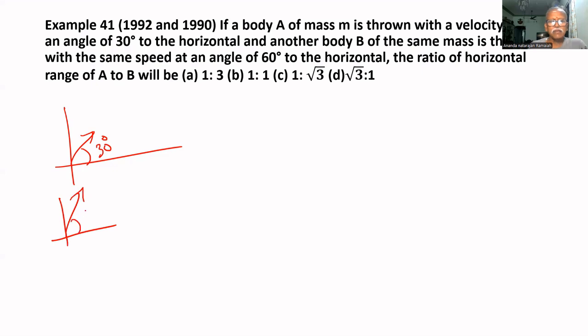The second body has the same mass but is thrown at 60 degrees. For the ratio of horizontal ranges, we know that both are equal.